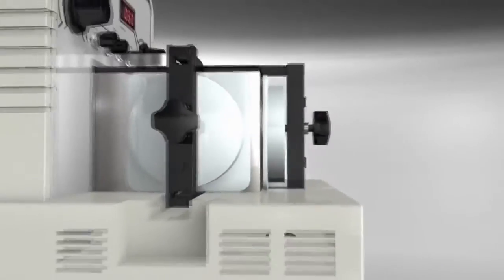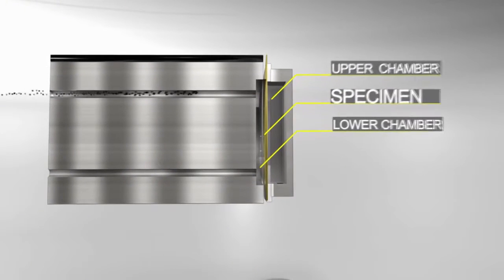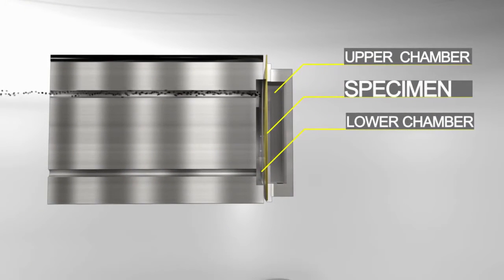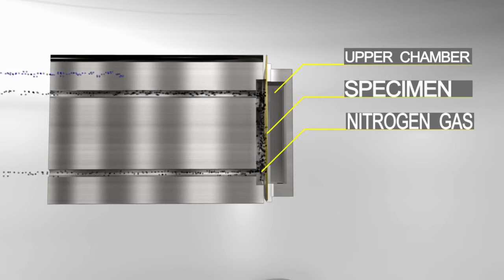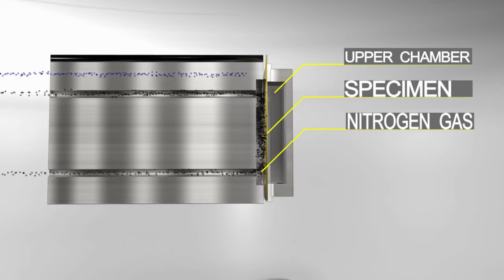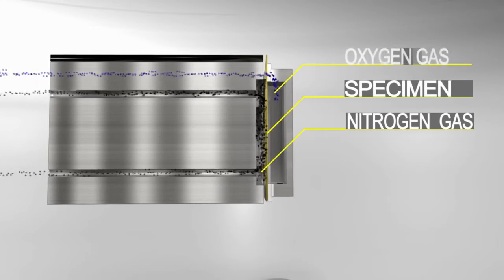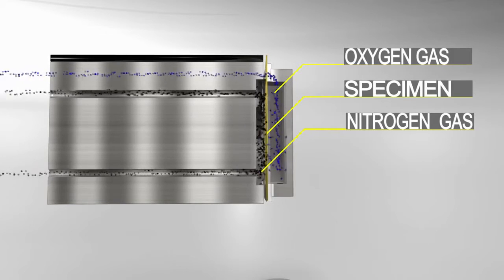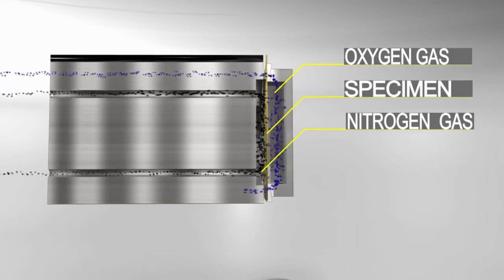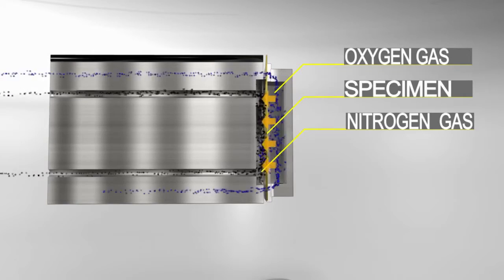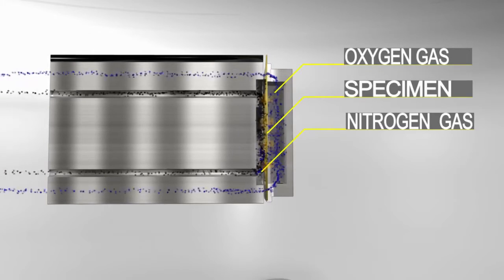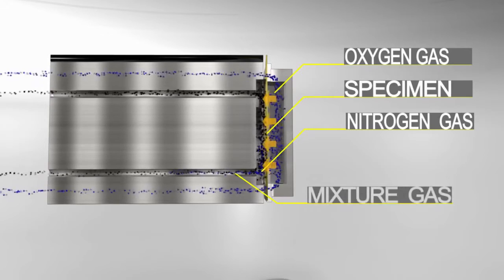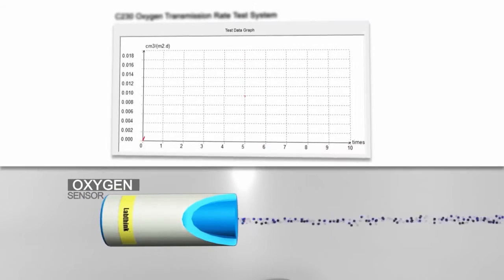C230 performs tests according to the following principle: The preconditioned specimen is mounted between the upper and lower chambers at ambient atmospheric pressure. One chamber contains oxygen or air; the other chamber is slowly purged by a stream of nitrogen. Due to the concentration difference, oxygen molecules permeate through the specimen into the nitrogen side and are taken to the coulometric sensor where proportional electrical signals are generated. The oxygen transmission rate is then obtained by analyzing and calculating the signals.